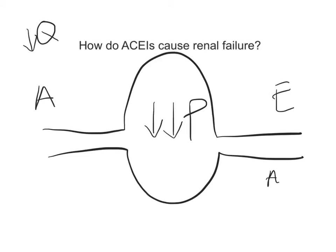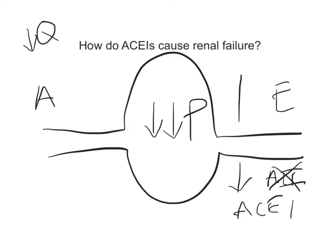Angiotensin 2 works at the efferent arteriole. If you were to give an ACE inhibitor, you effectively block angiotensin 2, cause the same vasodilation as before, but now you're dropping the pressure even more and causing renal failure.